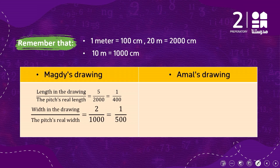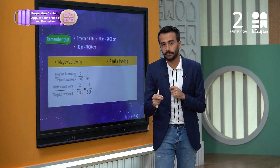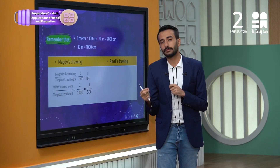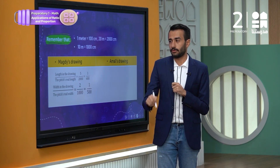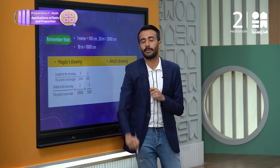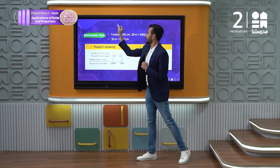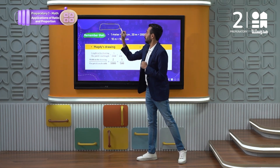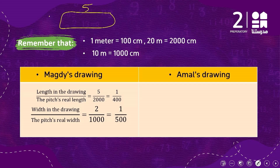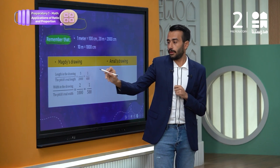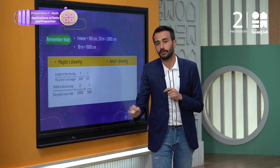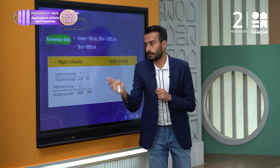This is another way to solve: you can start with the numbers or lengths of the drawings themselves. For Magdi's drawing it was 5 and 2. Let's take 5 over 2000 and 2 over 1000. Here we get 1 over 400 and here 1 over 500 — they are not equal, so Magdi's drawing is not right.